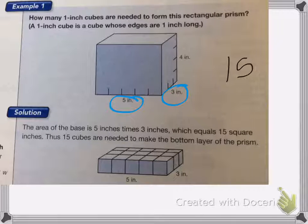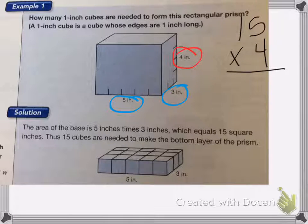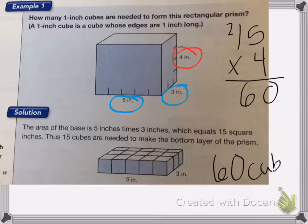So now what I'm going to do is I'm going to multiply 15 cubes by my height, so I know how much the entire thing takes. So it's 4 times 5 is 20, carry my 2. 4 times 1 is 4 plus 2 is 6. So it would take 60 cubes to fill up this whole shape.